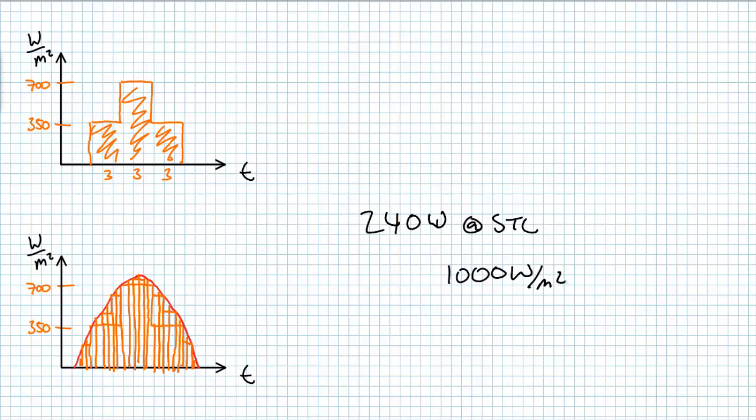The most pertinent piece of data within STC is the radiant input. All PV panel power output is rated on an input of 1,000 watts per meter squared.